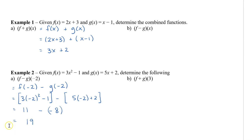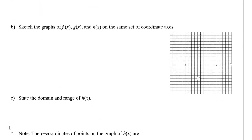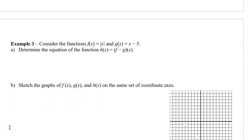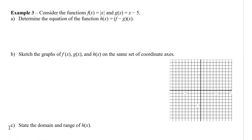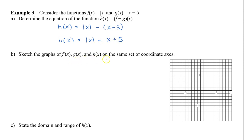In the above investigation, we added two functions together. Now let's look at what happens when we subtract two functions. Consider f of x equals the absolute value of x and g of x equals x minus 5. Determine the equation of h of x equals (f − g)(x). So h of x equals the absolute value of x minus, in brackets, x minus 5. Removing those brackets, we get the absolute value of x minus x plus 5. I want you to sketch the graphs of f of x, g of x, and h of x on the same coordinate axes to compare all three.